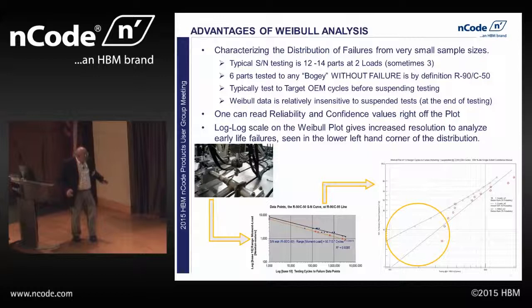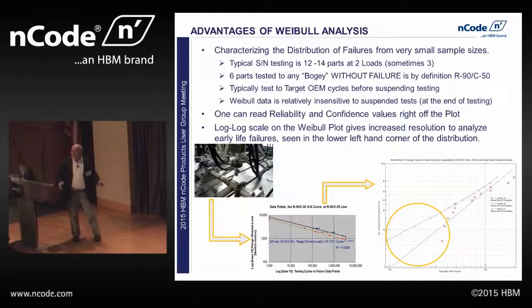Weibel data is very insensitive to run-out conditions. If I have a part way out here that I quit testing at two million cycles — that's good enough to quit — it's relatively insensitive to that. Typically we suspend target cycles at two million or two and a half million in testing. Plus, we can read the reliability and confidence levels right off the plot.